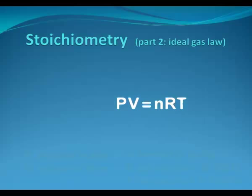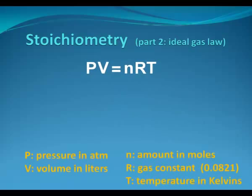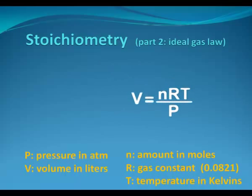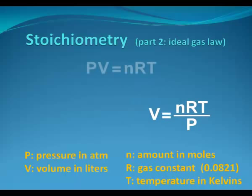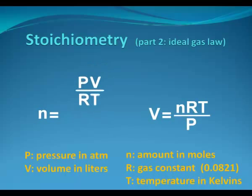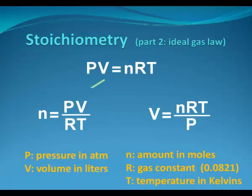Now the ideal gas law can be rearranged depending on what parts we need to know. For example, let's say we need to know volume. To know volume we need to know moles, R, T, and P. So V is equal to nRT over P. Alternatively, we might want to know moles. If that's the case, we divide both sides by RT. So n moles is equal to PV over RT. The units here on the bottom are atmospheres, liters, moles, and kelvins.